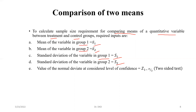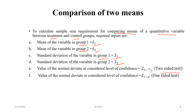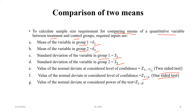The value of the normal deviate at the considered level of confidence, z1 minus alpha by 2, will be used for a two-sided test, and z1 minus alpha will be used for a one-sided test. The value of the normal deviate at the considered power of the test will be z1 minus beta.